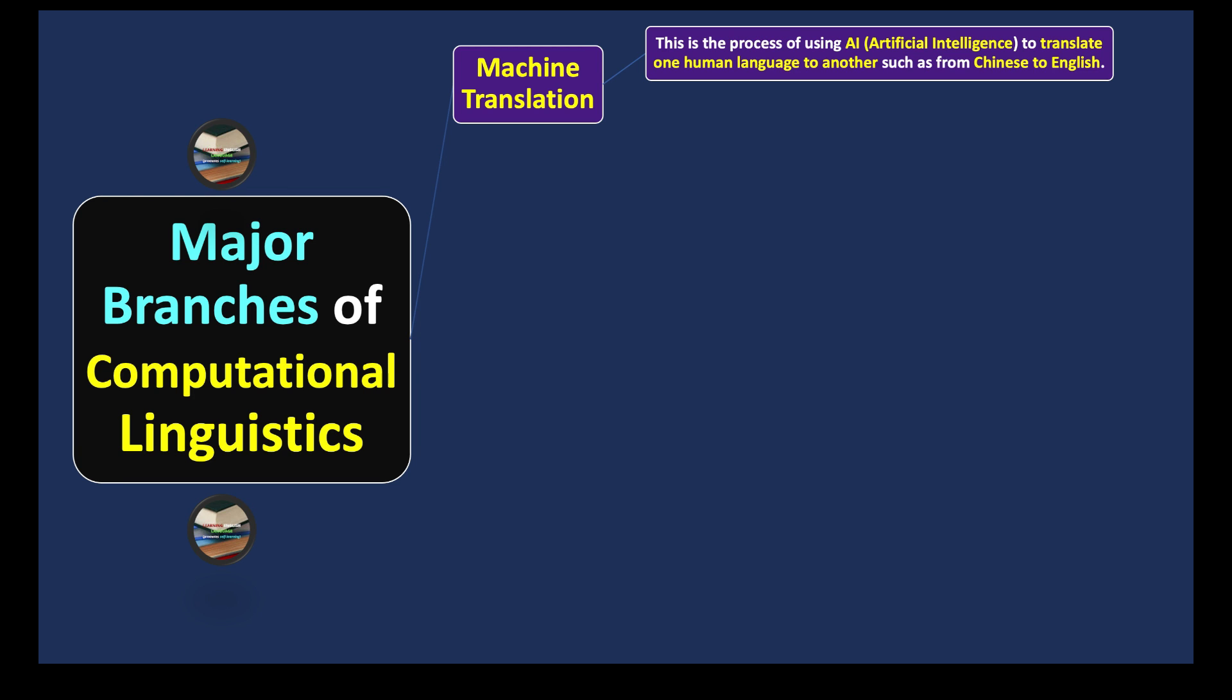The example we can have is Google Translate, which is a good example. Not only Google Translate—there are a number of applications and software which can help us translate from one language to another. All those applications can be included under the category of machine translation.